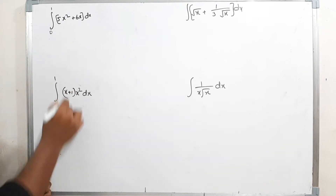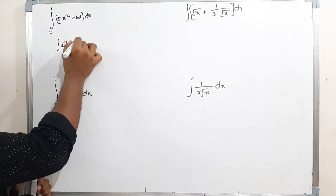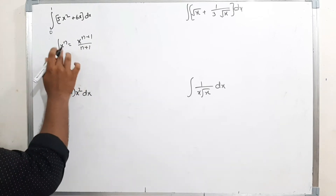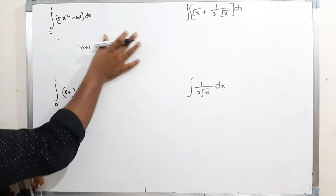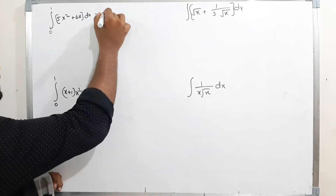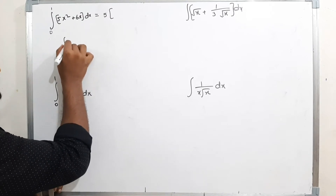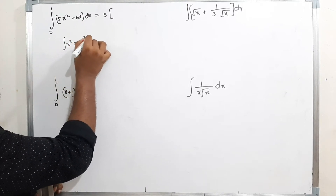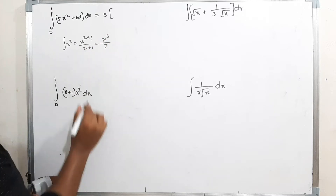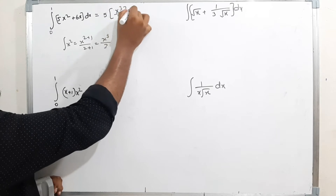The integration formula for x^n is x^(n+1)/(n+1). Using this formula, the integration of 5x² is 5 into x^(2+1)/(2+1), which is 5 times x³/3. Then plus 6 times the integration of x.